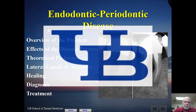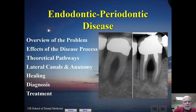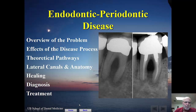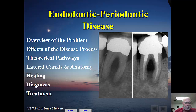We're going to be going through endodontic and periodontic disease, covering a couple of topics. I know you've had some of this before in your perio class, but we're going to look at this from the endodontic perspective. We're going to go through an overview of the problem, the effects of the disease process, the theoretical pathways, lateral canals, and anatomy — though we may not get to lateral canals and anatomy. We're going to talk about healing, a lot about diagnosis, and touch on possible treatment outcomes.